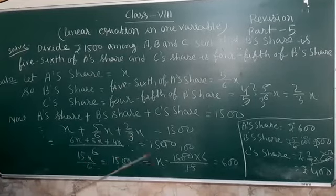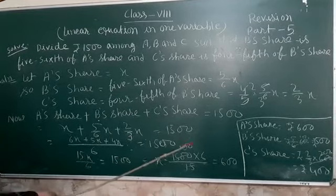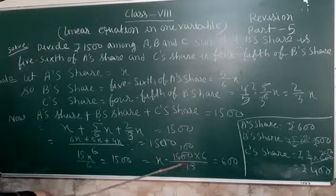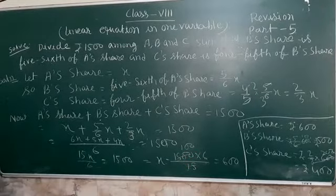So, X is equal to 1500 × 6 ÷ 15 is equal to 600.